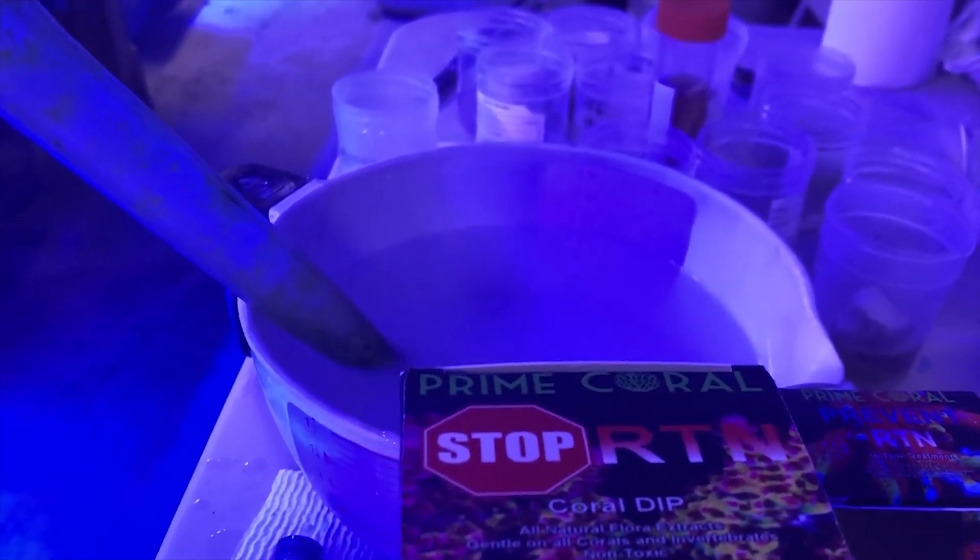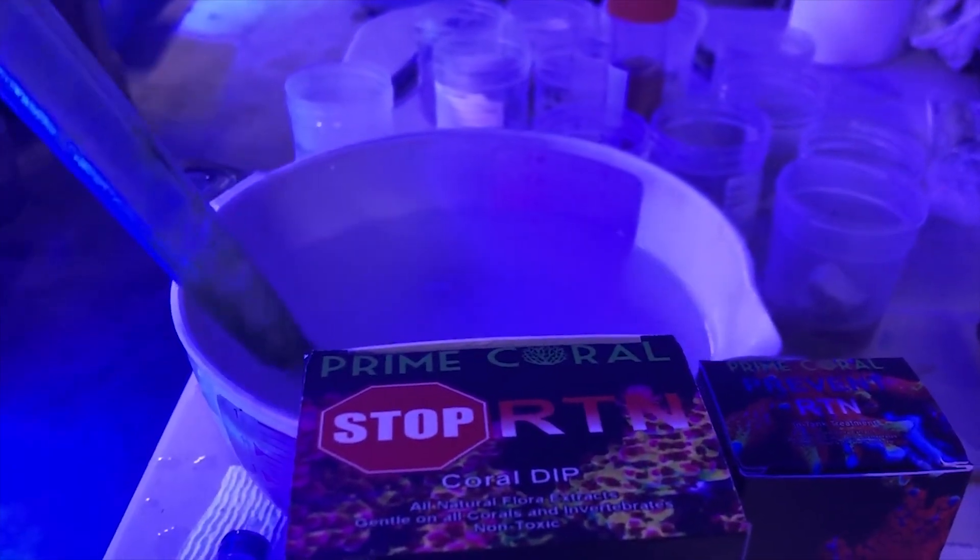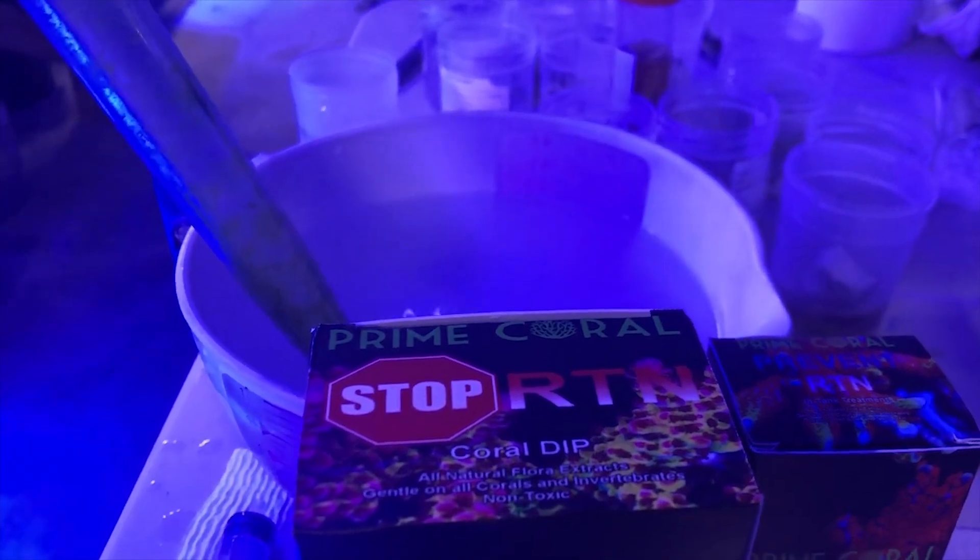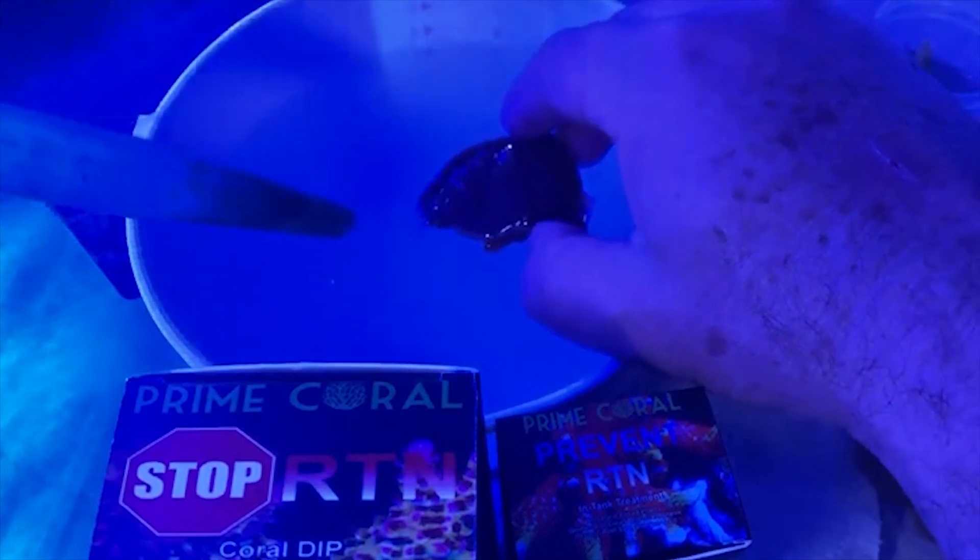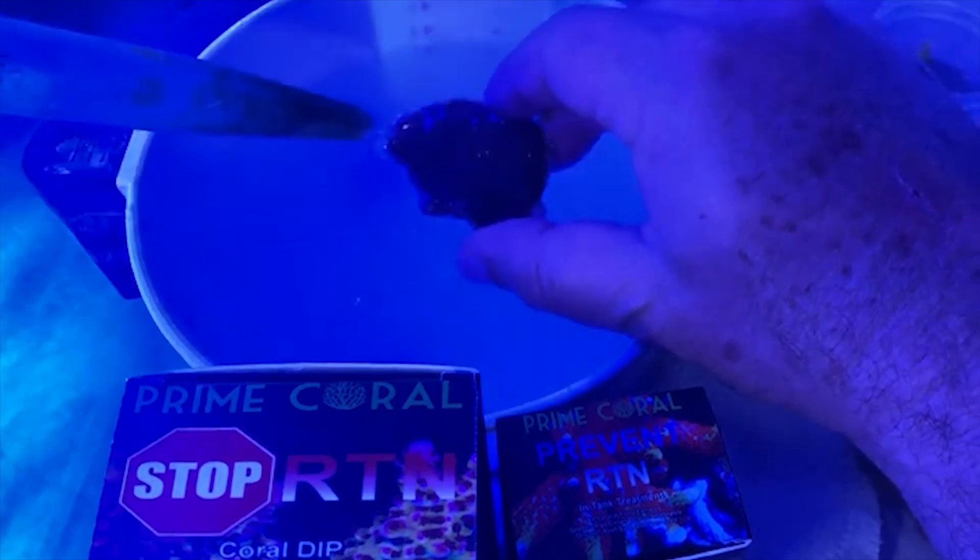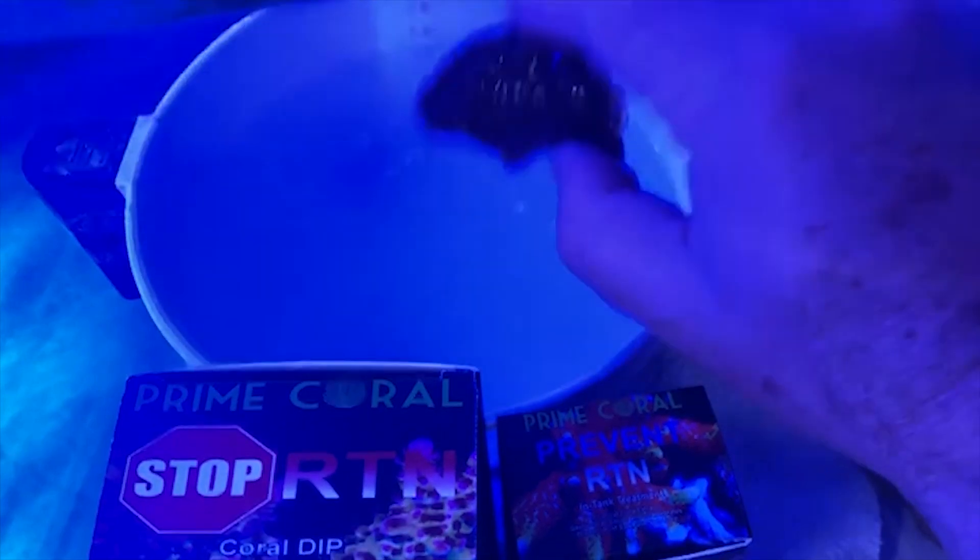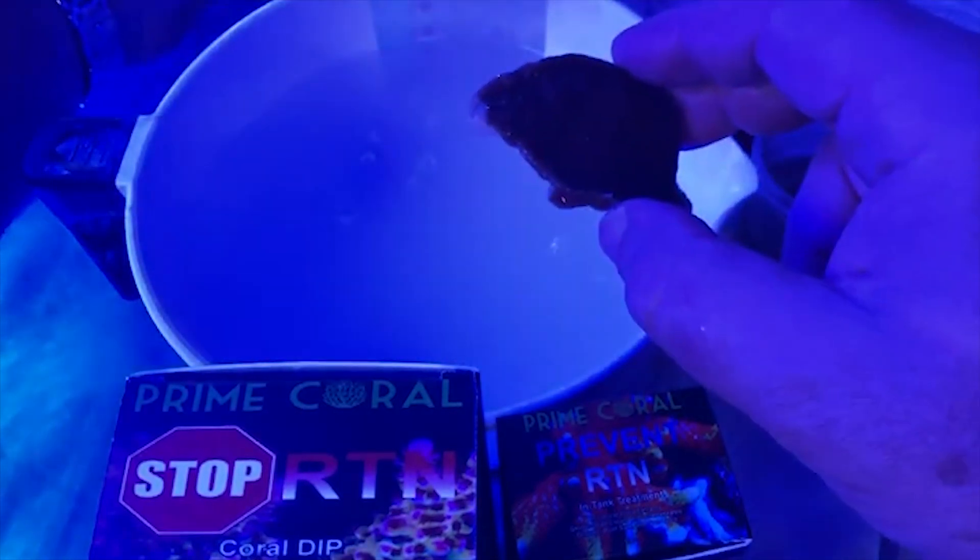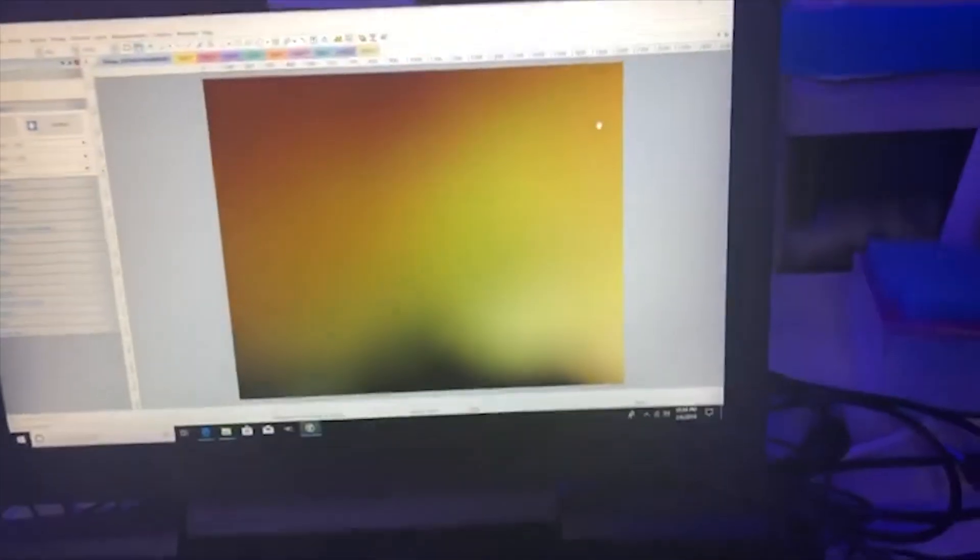This can be done by actually picking up the coral itself and making sure that you shoot a jet of this dip right onto the coral tissue. All right, let's take this coral that we've just irrigated and get it back under the microscope and see what our dip did.